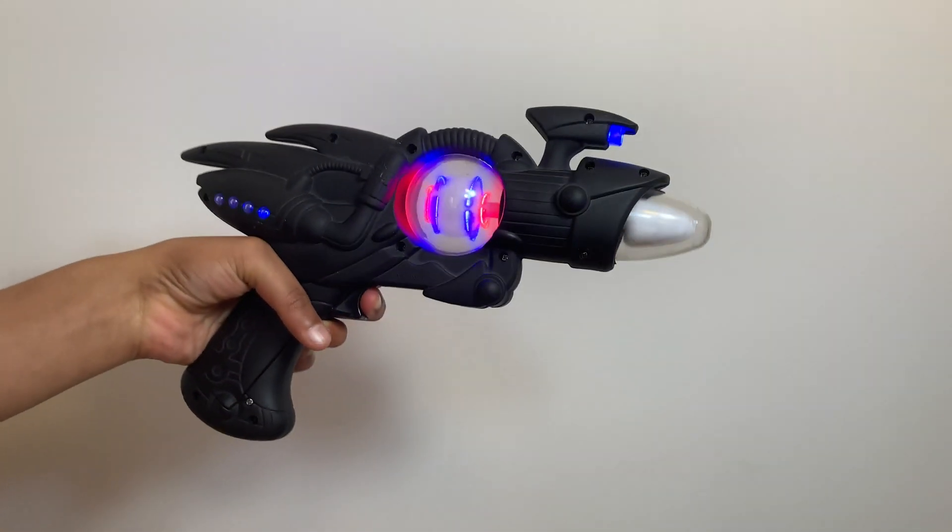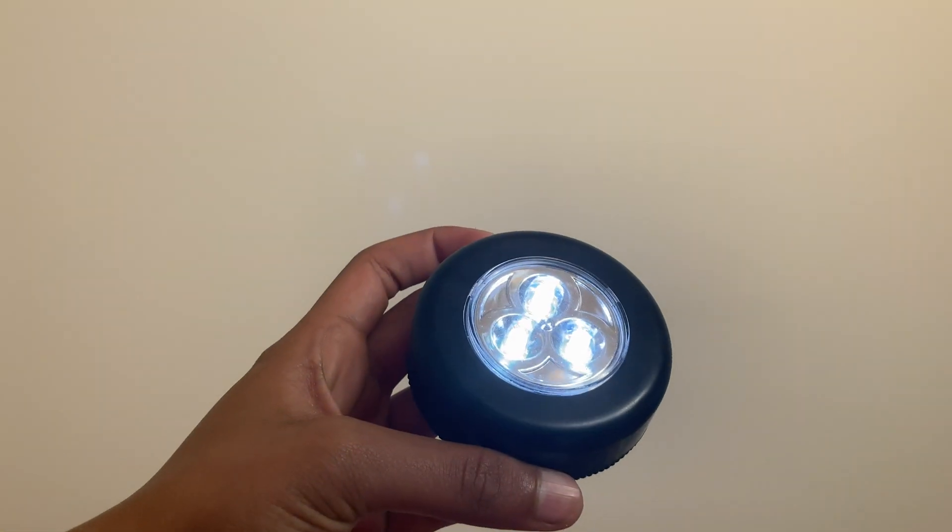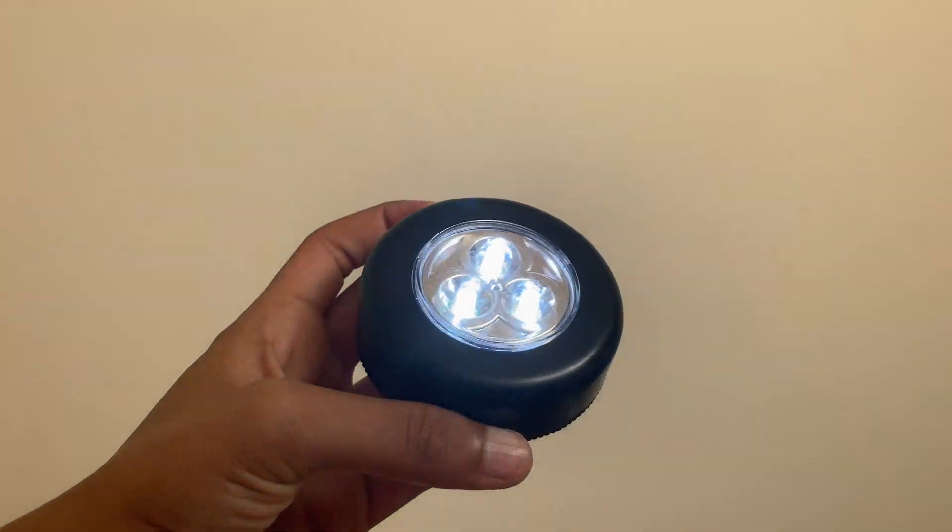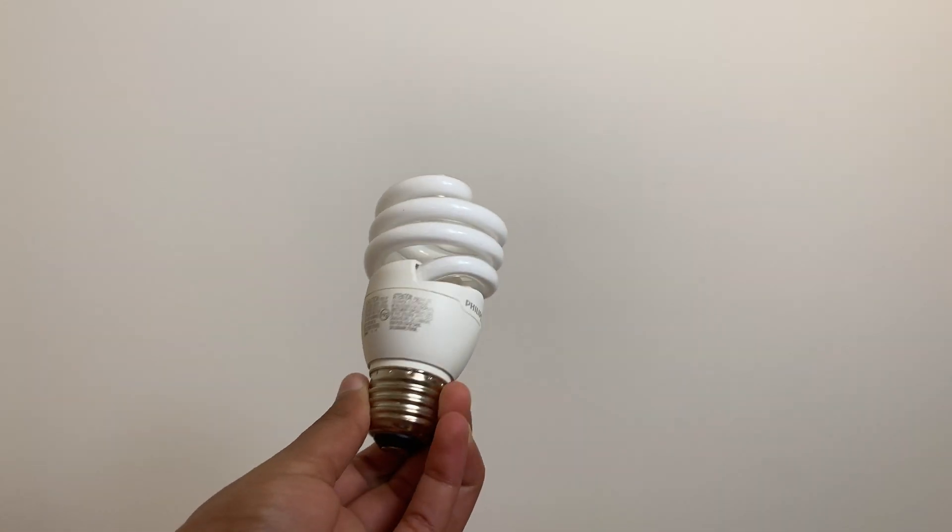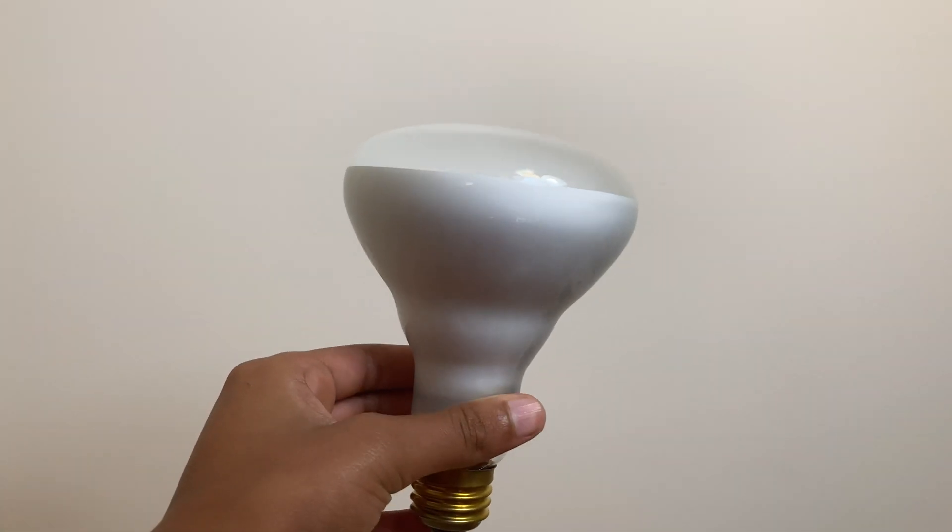So let's first talk about the types of lamps. Do you see this? This is an LED lamp. This one is a CFL lamp. And the last one you see here is an incandescent lamp.